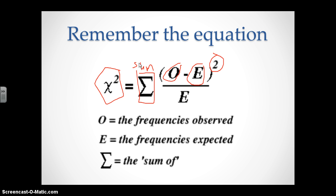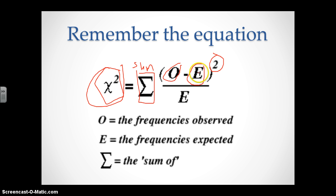Here is our Chi-Square formula. The symbol stands for Chi-Square, and this symbol means sum. The observed value is the actual number of offspring in each category. The expected value is the amount predicted by the Punnett square. You subtract those two values and square the result, then divide that number by the expected value. You do this for each category of offspring.